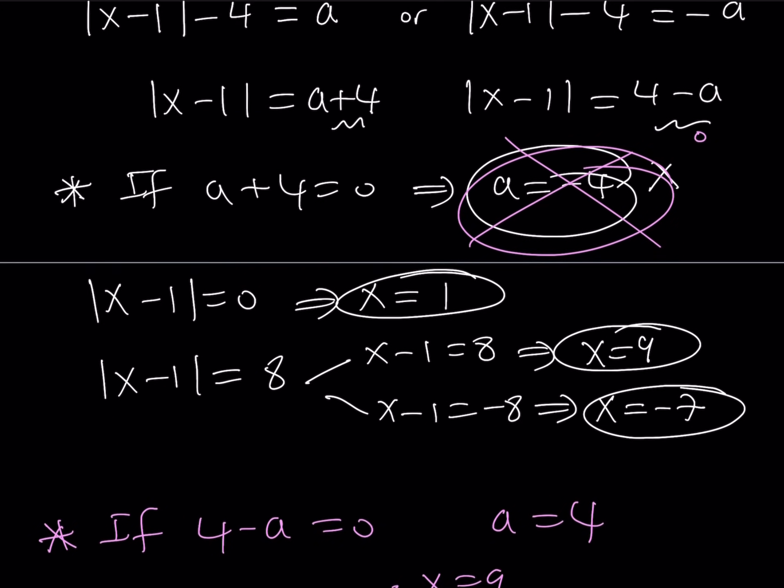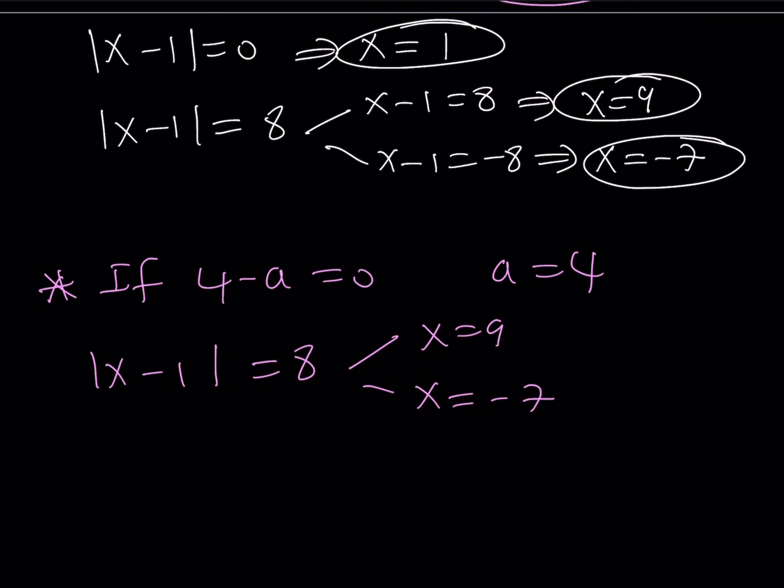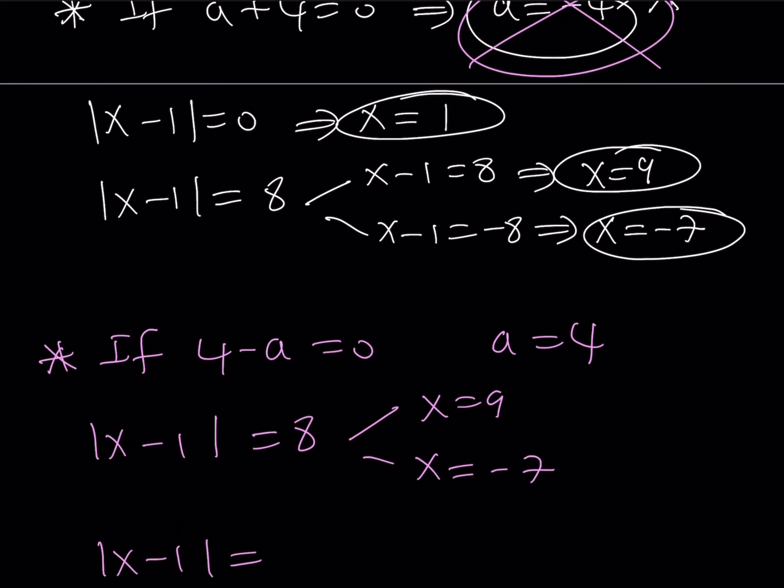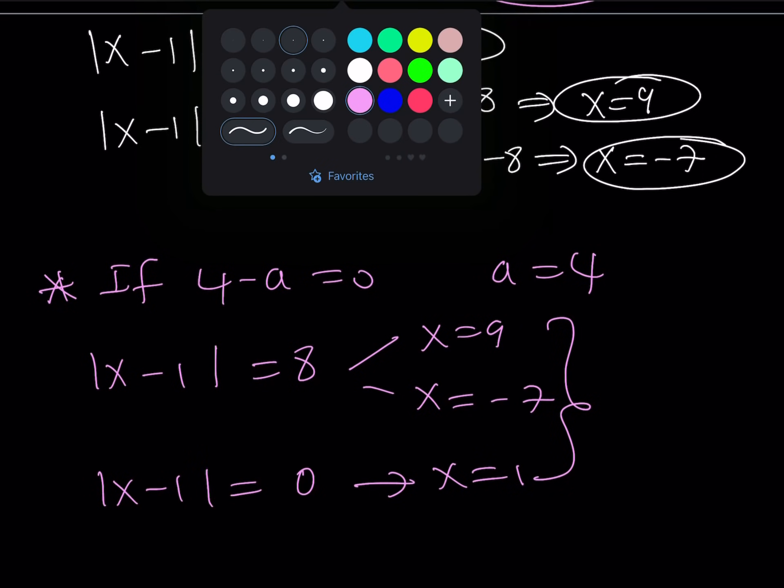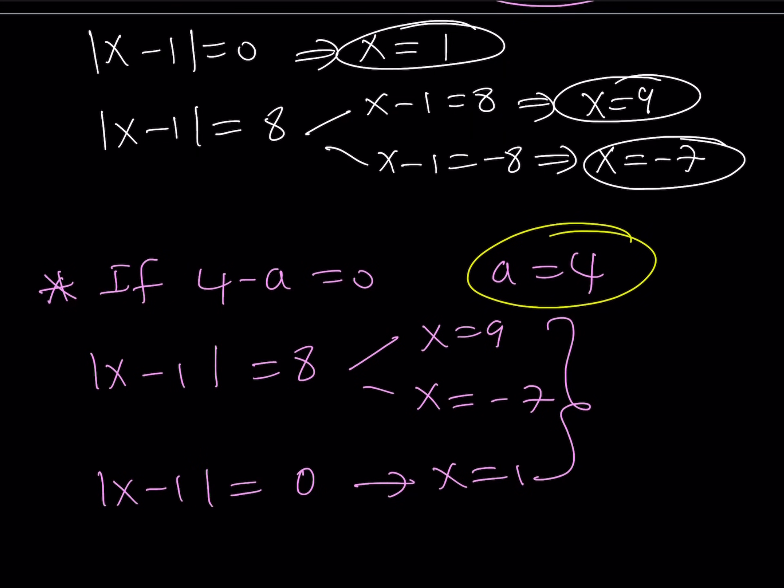And then if you use the second one for the absolute value of x minus 1 is equal to 4 minus a, which is 0, from here I get x equals 1. So I get 3 solutions for this equation, and a equals 4 is a good value. So this means that a equals 4. Make sense?